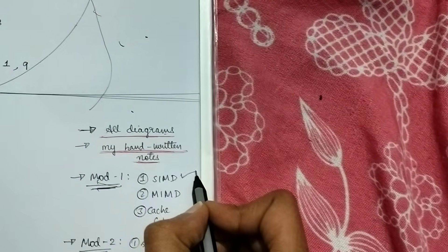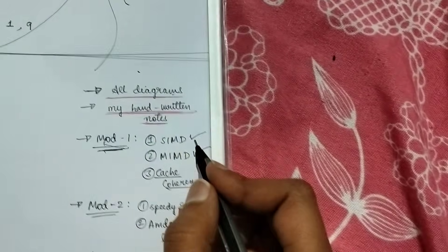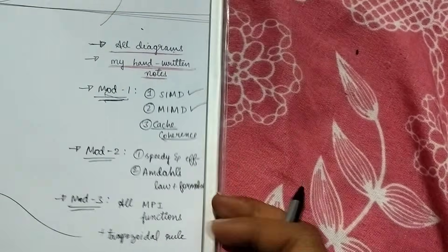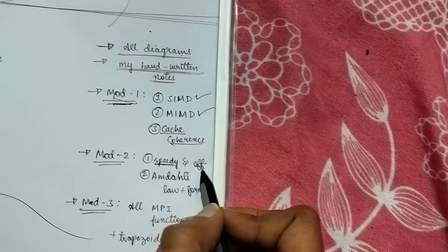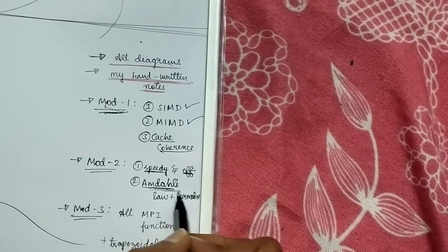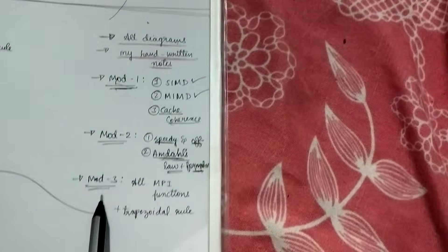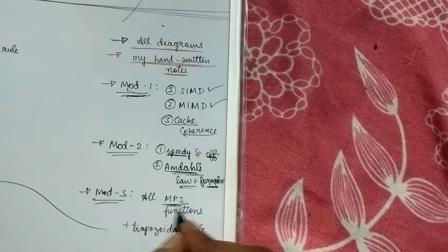For the first module, learn about SIMD with diagram, learn about MIMD, and then learn cache coherence — three questions. In the second module, learn about speedup and efficiency — there is a formula for this. Then learn about Amdahl's law and its formulas. There are formulas everywhere here, so don't miss that. Learn these two questions for the second module.